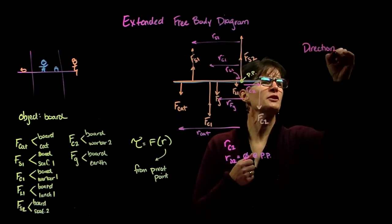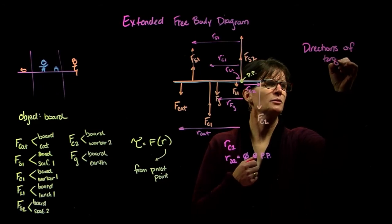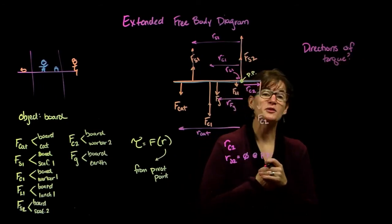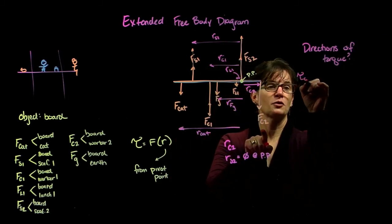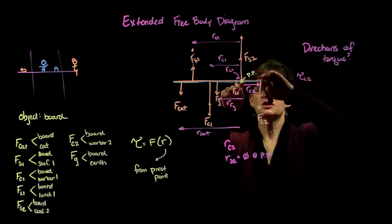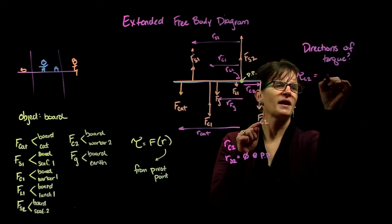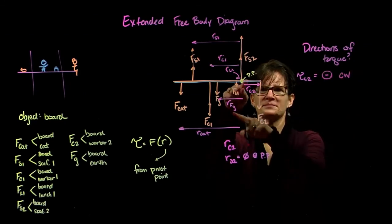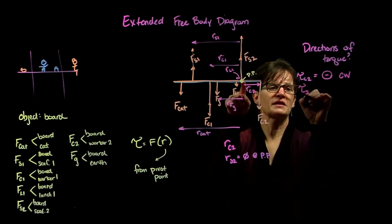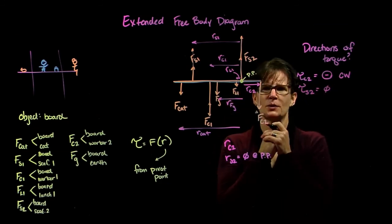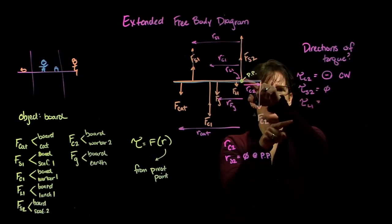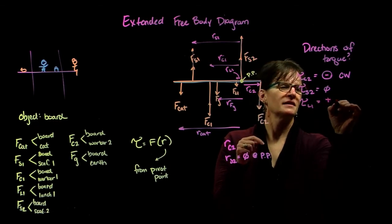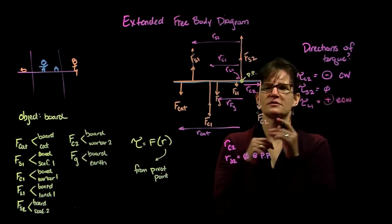As you continue your analysis, you will want to remember to think about the directions of the torque. The force and the torque of construction worker number two, well she would rotate the object clockwise, sorry, negative direction, clockwise rotation. The torque of scaffolding number two, well there's no radius so there's no torque. The torque of lunch one, lunch one would cause the object to rotate in the counterclockwise direction, so positive torque.